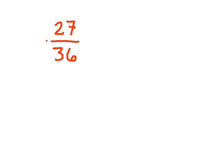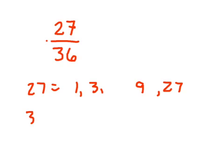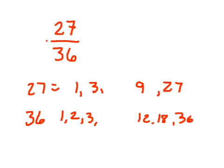Let's write out the factors for these numbers. 27, you would have 1 times 27, 3 times 9, and I think that's it for 27. For 36, we'd have 1 times 36, 2 times 18, 3 times 12, 4 times 9, and 6 times 6. So, here's all your factors of 36.